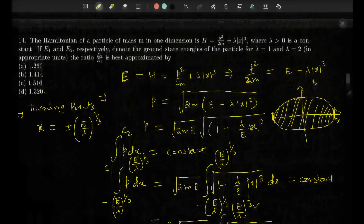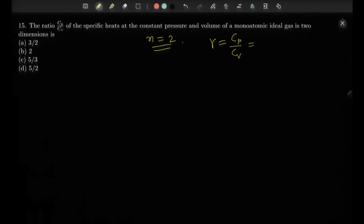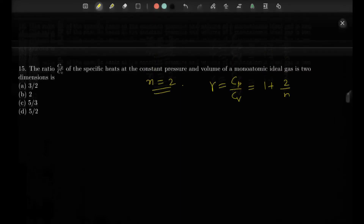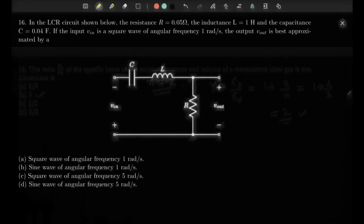The next question asks for the ratio Cp/Cv for a monatomic gas in two dimensions. In two dimensions, a monatomic gas can move in two directions, so the degrees of freedom n = 2. The ratio γ = 1 + 2/n = 1 + 2/2 = 2. So the answer is 2.